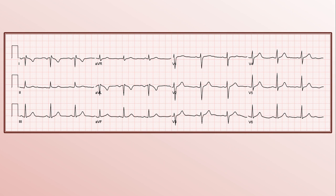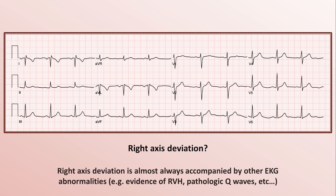Here's an EKG finding I come across on the wards a few times per year. The clinical history in this case is actually irrelevant. At first glance, with a negative QRS complex in lead 1 and positive complex in AVF, it looks like plain old right-axis deviation. However, right-axis deviation is almost always accompanied by other EKG abnormalities such as evidence of RVH or pathologic Q waves. This is an example of lead reversal, also known as lead transposition, caused by two wires being switched when the EKG was recorded.